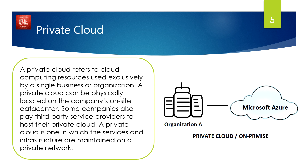A private cloud refers to cloud computing resources used exclusively by a single business or organization. A private cloud can be physically located on a company's on-site data center. Some companies also pay a third-party service provider to host their private cloud. The services and infrastructure are maintained on a private network, meaning a particular company has its own data center and stores their data there without sharing it with any public cloud service provider.